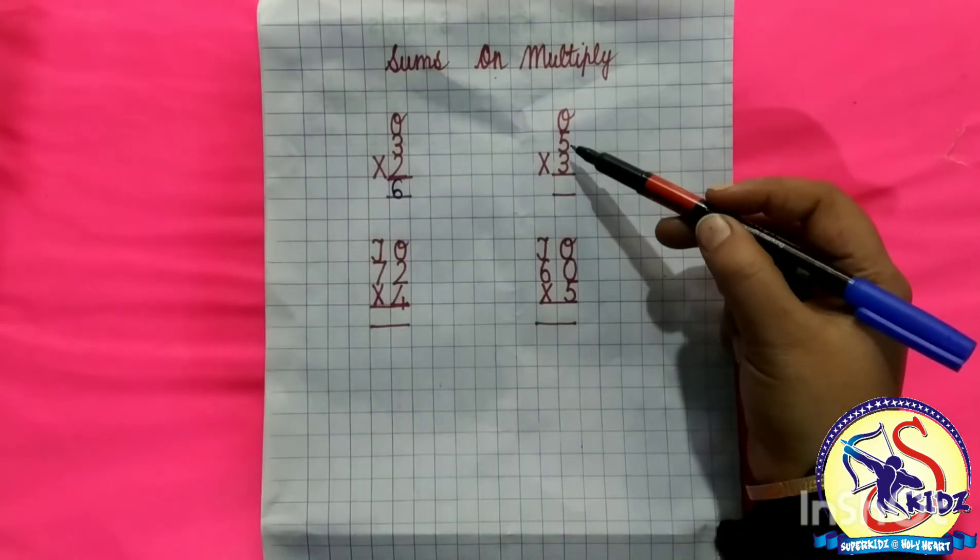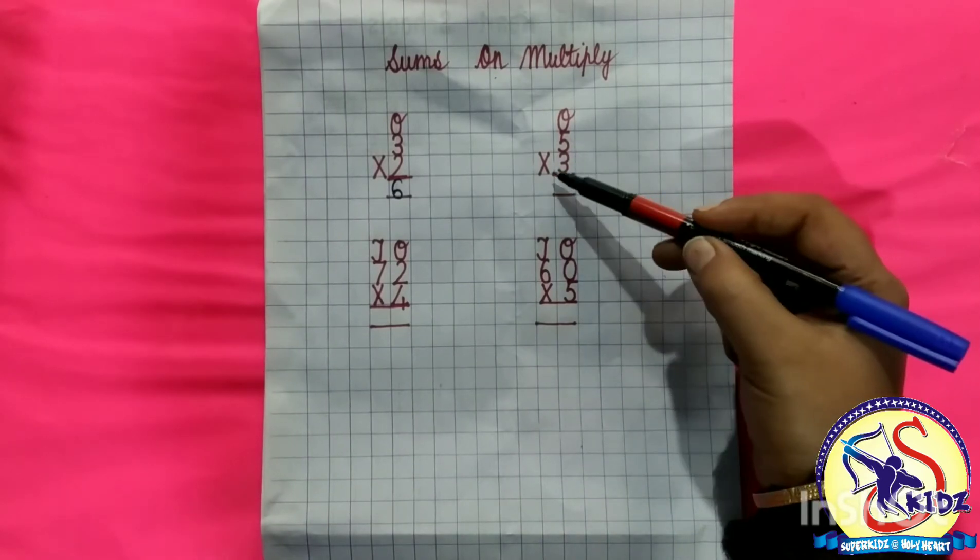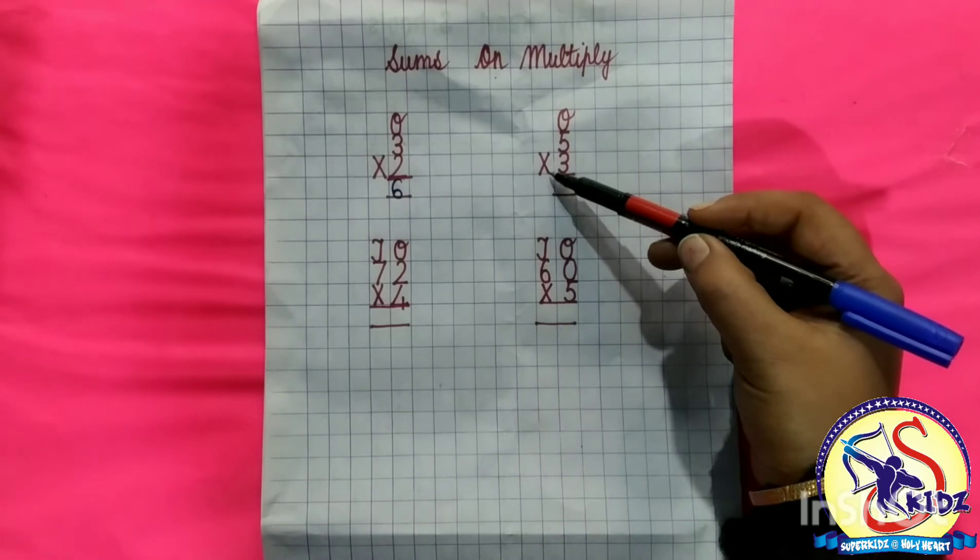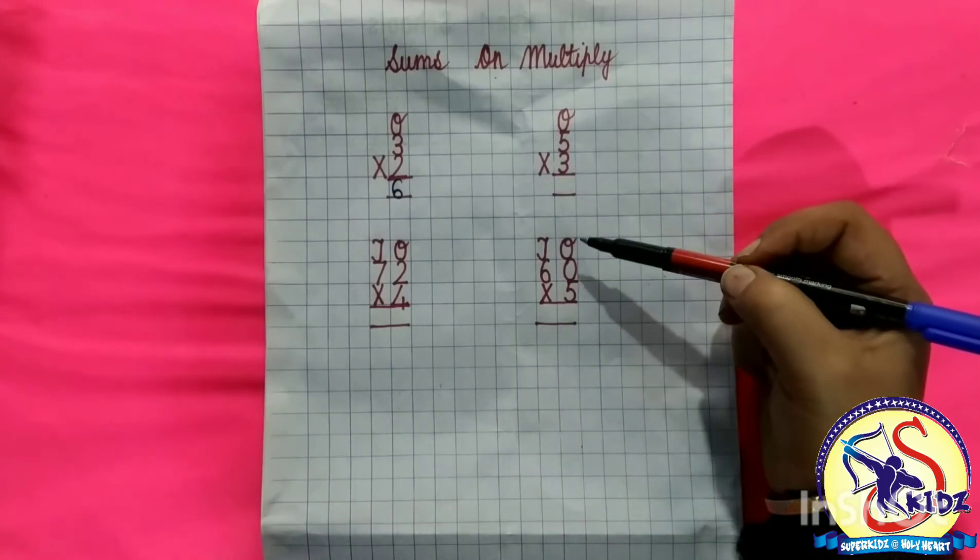We have taken two numbers here, 5 and 3, with sign of multiply. Which number is written here? Number 3. So we will speak table of 3.